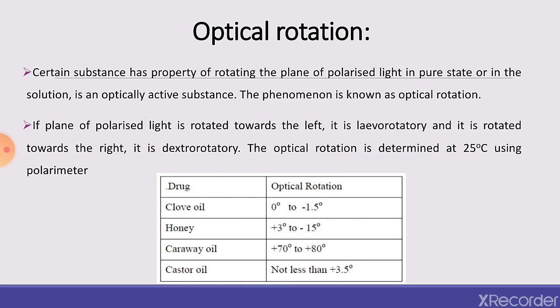The fourth physical factor is optical rotation. Certain substances have the property of rotating the plane of polarized light; such substances are called optically active. If the plane of polarized light is rotated towards the left, it is called levorotatory, and if rotated towards the right, it is called dextrorotatory. Optical rotation is determined at 25°C using a polarimeter. For example, clove oil is 0 to −1.5°, honey +3 to −15°, caraway +70 to +18°, and castor oil not less than +3.5°.